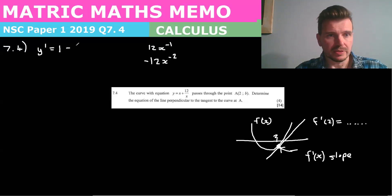And that would become -12x^(-2), which would then be 1 - 12/x^2. They don't like you to do negative exponents, so that would be your y'.